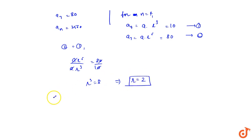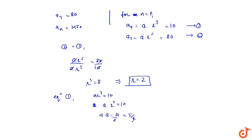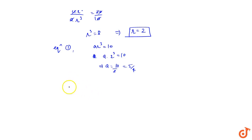Now substituting into equation 1, a times r cubed equals 10, so a times 2 cubed equals 10. This implies a equals 10 by 8, which equals 5 by 4. So now we know the first term a equals 5 by 4 and the common ratio r equals 2.